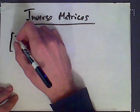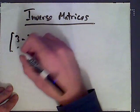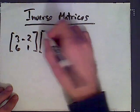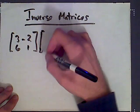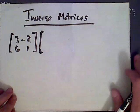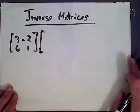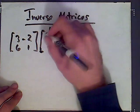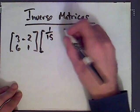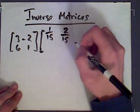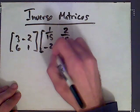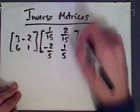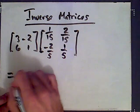But for now let's take the example we had before. Now there's a procedure to find this inverse matrix which we're going to describe in a later part of this video series on inverse matrices and elementary matrices. But for now let me give you the inverse matrix: it is 1/15, 2/15, -2/5, and 1/5. Again, there's a procedure for finding this and I'll show you that in a later video.